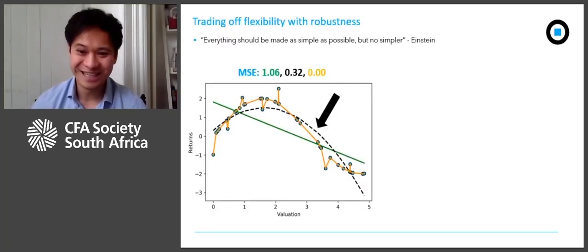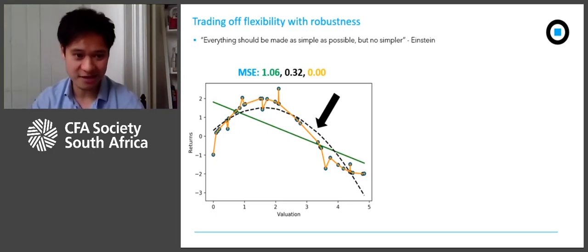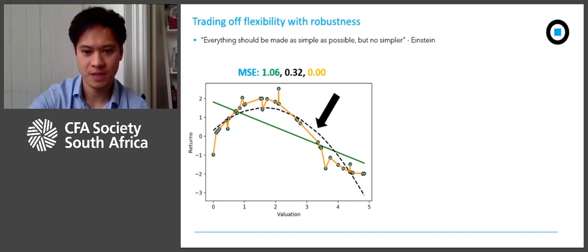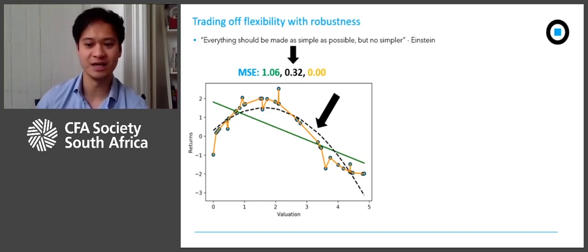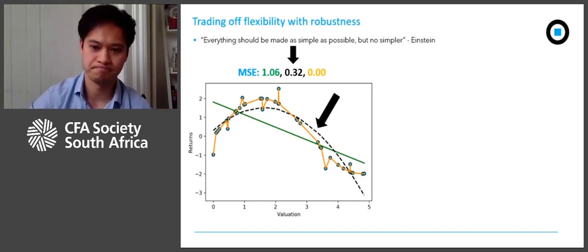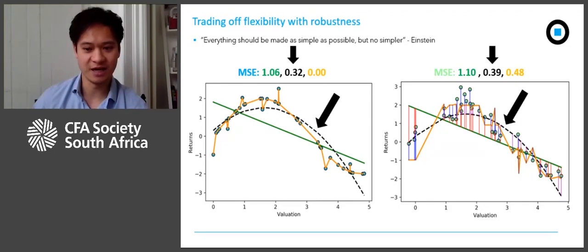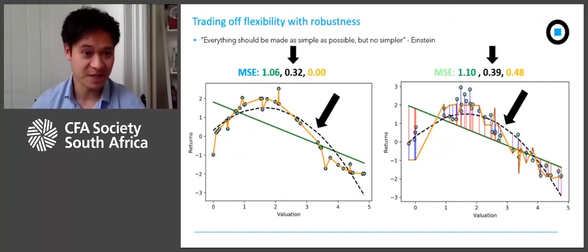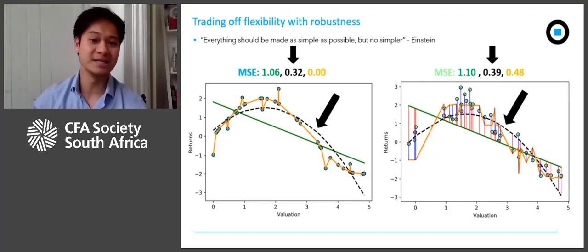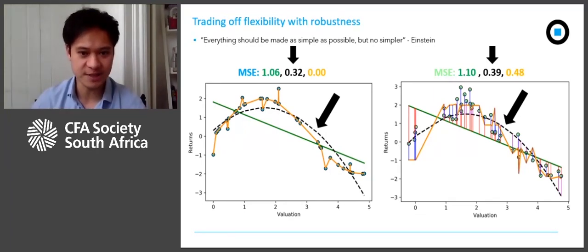To confuse things further, I'm going to add a third model — the dashed black line — which is slightly more complex than the simple straight line but less flexible than the complex orange model. In the original data, this new model has a mean squared error that's low but not zero — it doesn't perfectly fit all of the data points. Testing on new data, we can see that more flexibility isn't always better. Our third model still has higher error when faced with new data, going from 0.32 to 0.39. However, the increase in error is less than the complex model's increase, and overall our third model ends up having the best performance on the new data with the lowest mean squared error.